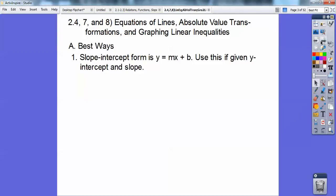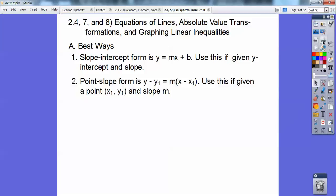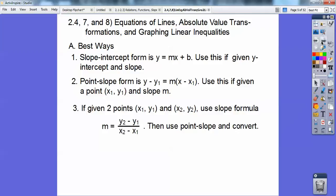The best ways about lines is do slope-intercept form, y = mx + b. If they give you the slope and the y-intercept, this is the y-intercept, this is the slope right here. Point-slope form, y - y1 = m(x - x1). It's really easy to use if they give you the slope and a known point. If they give you two points, then first get the slope using y2 - y1 over x2 - x1. Then once you get your slope, pick a point and use point-slope form, then convert it back to slope-intercept form.